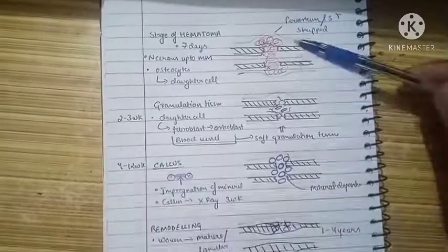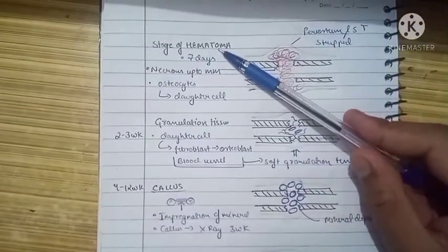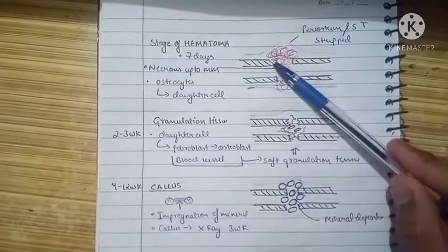Hello everyone, in this video we are going to understand healing of a fracture of cortical bone. Here we have five stages. The first stage is the stage of hematoma formation. This is the bone.